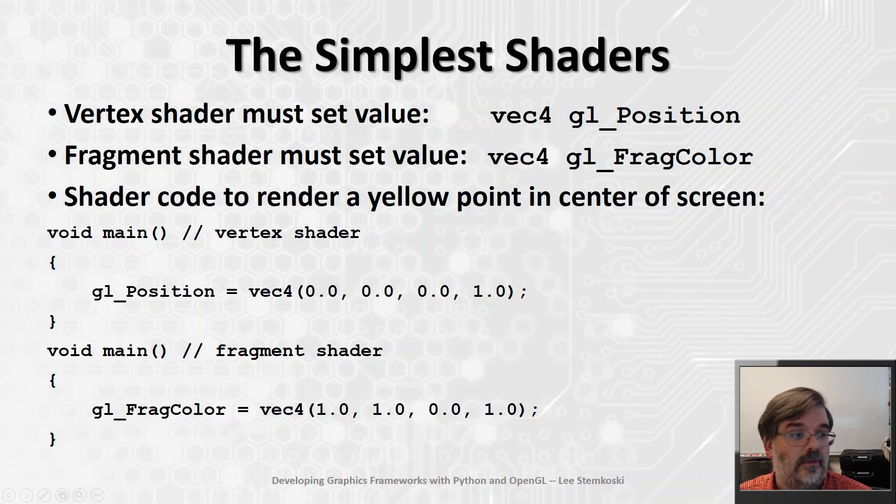And so, without further ado, here is the simplest possible shader code you could possibly create. And this will create a yellow point in the center of the screen. First, for the vertex shader, we'll literally just assign a value, a constant value, to the position. So gl_Position will be set equal to a vec4, 0, 0, 0, 1.